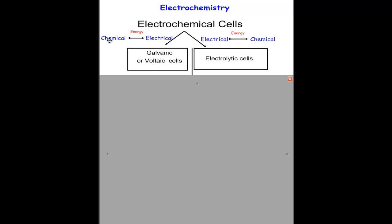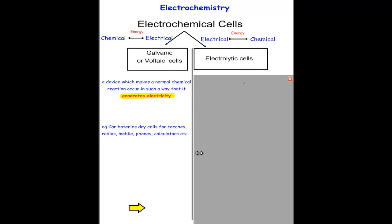In the galvanic, we are using the chemicals in it to produce electricity. While in the electrolytic one, we are forcing an electric current through the cell to bring out a chemical reaction. Examples of the galvanic cells are the car batteries, dry cells for torches, radios, mobile phones, etc. The chemicals in there are generating electricity.